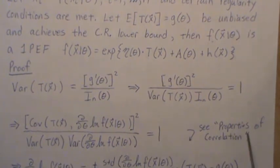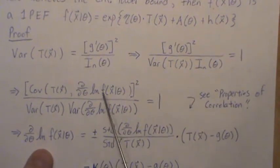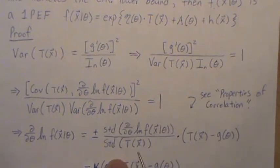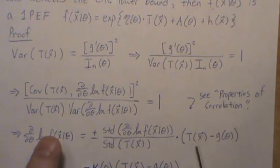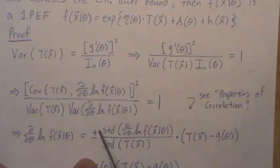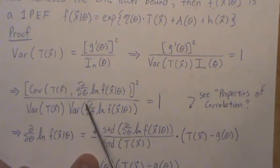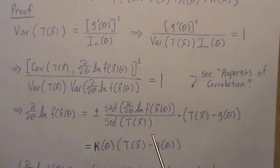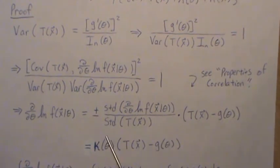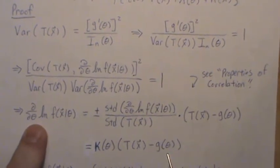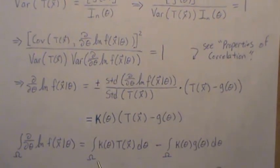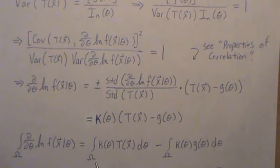From Properties of Correlation, this variable has an exact linear relationship with this variable. These are constants — this is a constant, this is a standard deviation constant. So there's an exact linear relationship. It's plus or minus: if the correlation is 1 it's plus, if it's minus 1 it's minus. Generically, let's call this K, so this equals K. Let's take K into both sides and integrate over all theta in the parameter space omega.